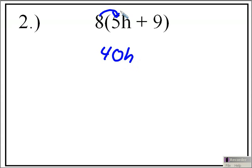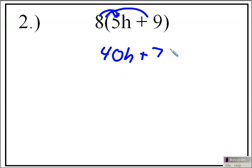And then we distribute the 8 to the 9. 8 times 9 is 72, so it's going to be plus 72. And that will be my final answer for number 2.